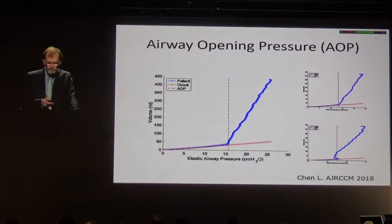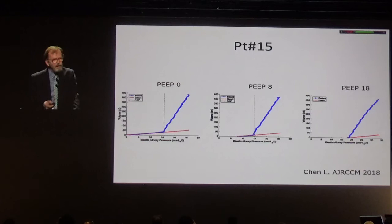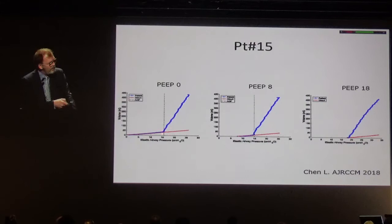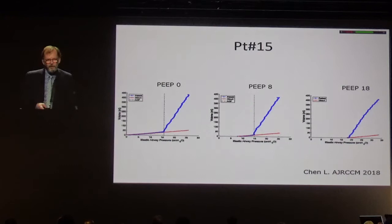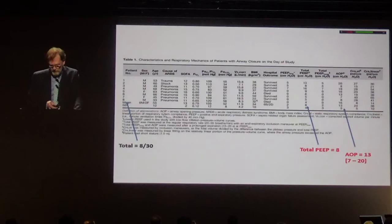Interestingly, this value of the airway opening pressure is very reproducible, at least over a few hours of measurements. Starting from zero, the opening pressure is 16. Starting from eight, the opening pressure is still 16. Only when you start above this opening pressure do you inflate the lung from the very beginning. This is still the same proportion in our now larger patient series.